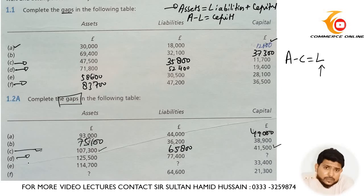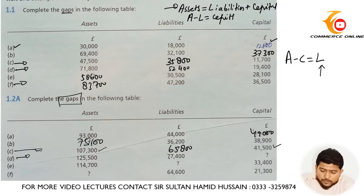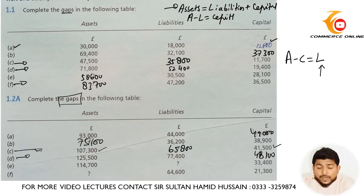In part D, assets are 125,500 and liabilities are 77,400, so capital is 48,100.